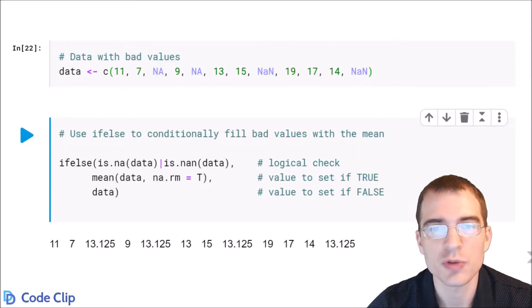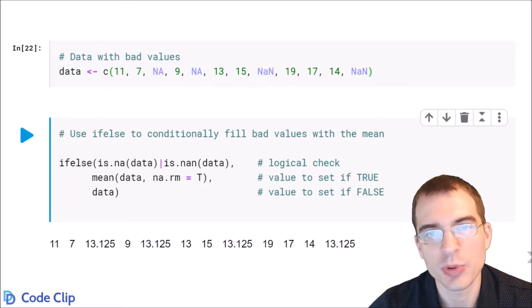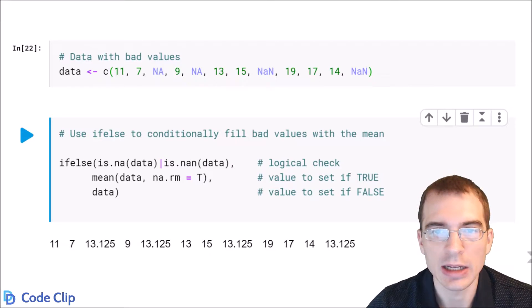Ifelse is a very useful function in R that lets you perform operations on every element of a vector all at once.